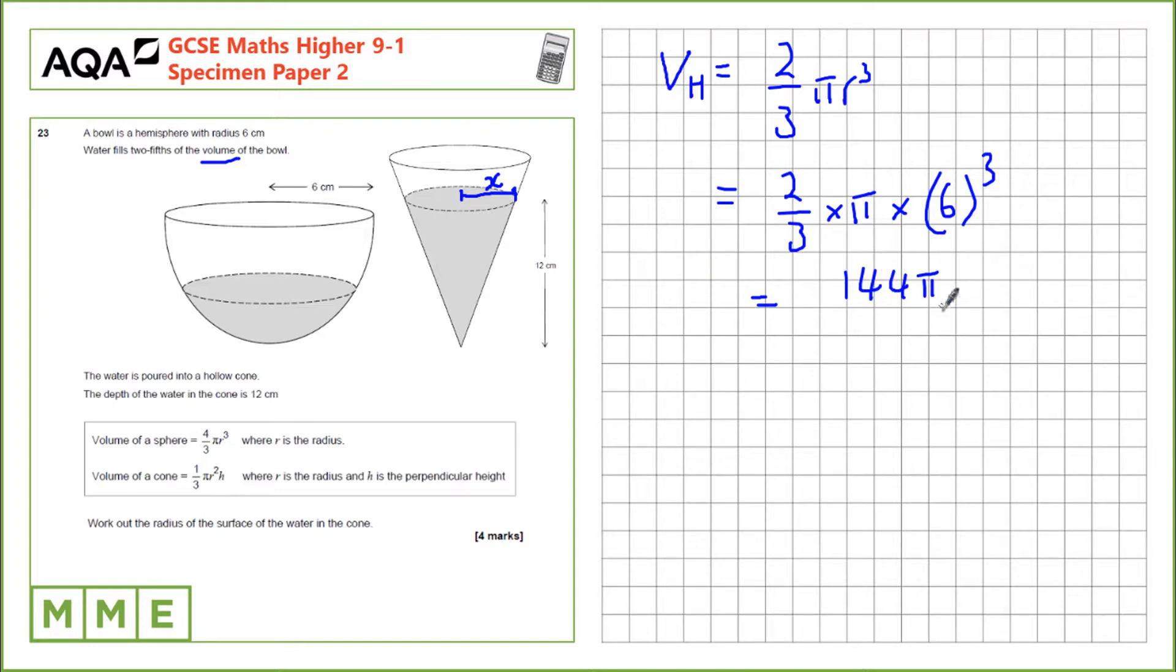The volume of the hemisphere is 144 pi, but we want the volume of the water, which we know from earlier is 2 fifths of the volume of the hemisphere, so 2 fifths times 144 pi, which equals 57.6 pi.